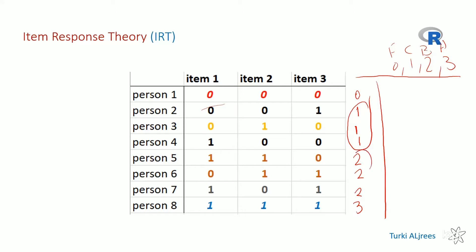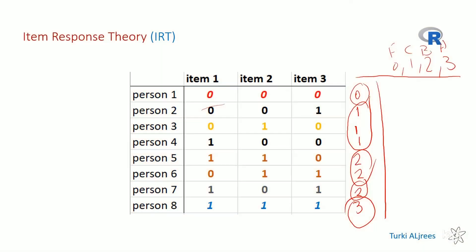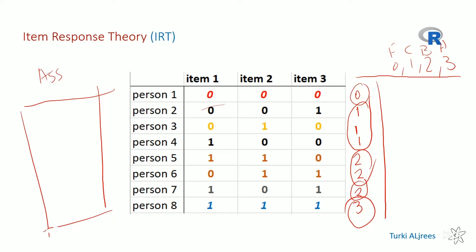This approach will not tell me anything meaningful on its own. If I present it to my department trying to assess our assessment — to see if our exam is fair, is it good, do we need to change it — this total-score approach alone is insufficient. Item Response Theory uses this historical data to help us properly assess our exam.